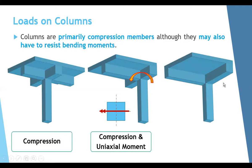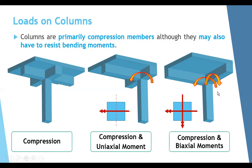The third case is a corner column, which has beams from two perpendicular sides and no continuity from the other parts of the building. You expect two moments: one about the y-axis and another about the x-axis. This is called compression plus biaxial moment. Our goal is to design columns under axial compression only, compression plus uniaxial moment, and compression plus biaxial moment.